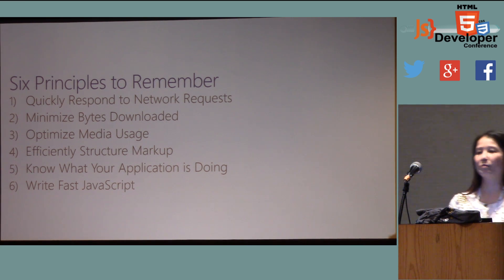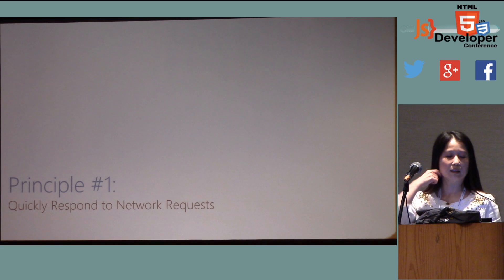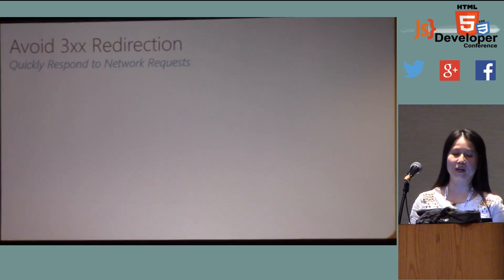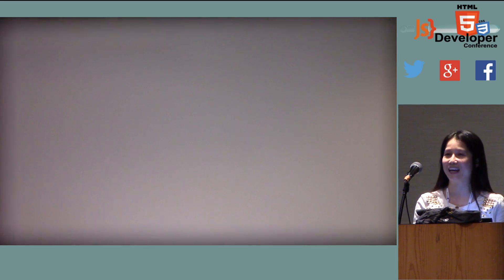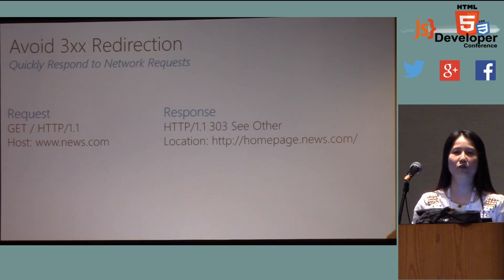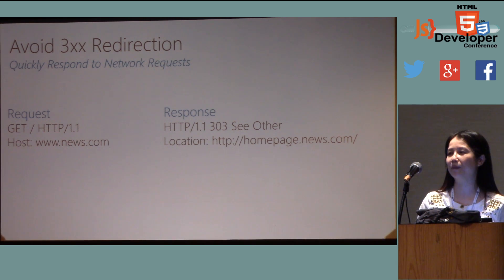Now I'll share the six principles we use for performance tuning. Principle one: quickly respond to network requests. You know the network has latency and your bandwidth may be limited, but you can't change it. What you can do is quickly respond. I would say avoid using redirects — this will hurt your performance. Our measurements show it easily costs about 200-300 milliseconds. We found that 63% of the top 1,000 popular websites use redirects, which is not recommended — that's at least 10-20% performance hurt overall.